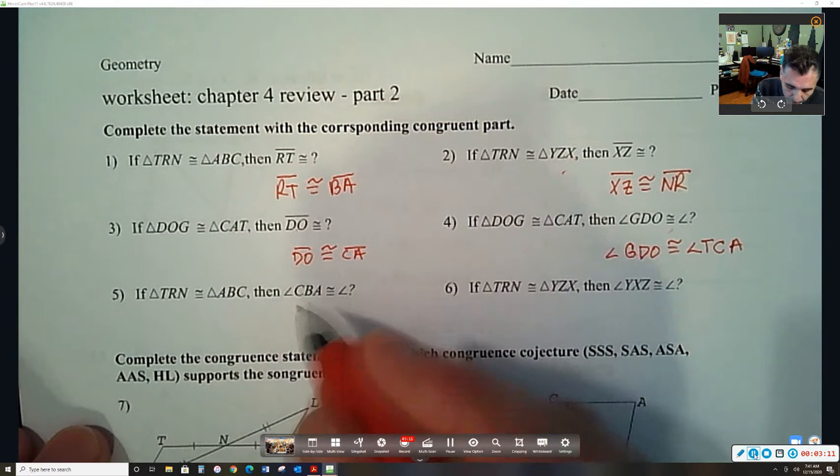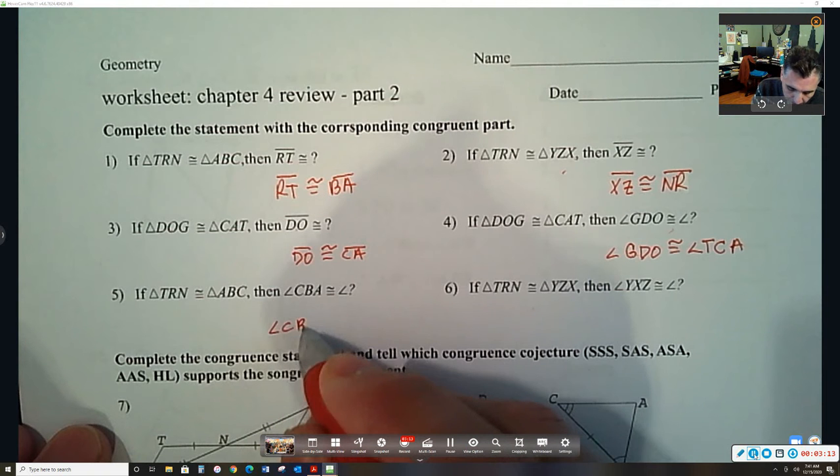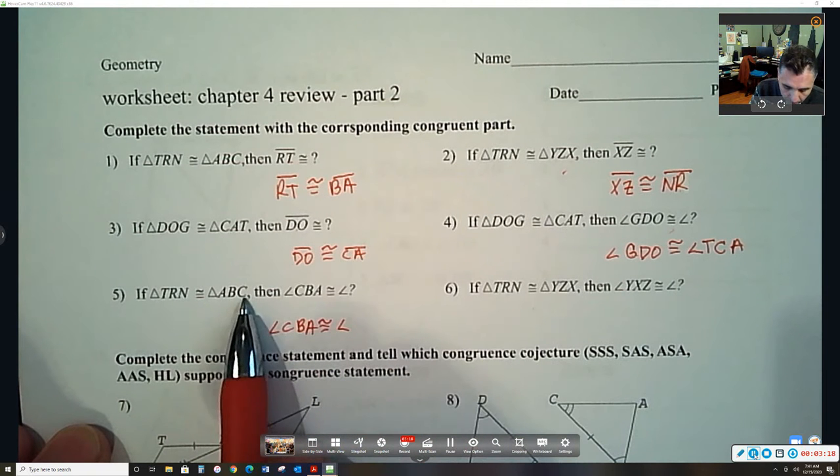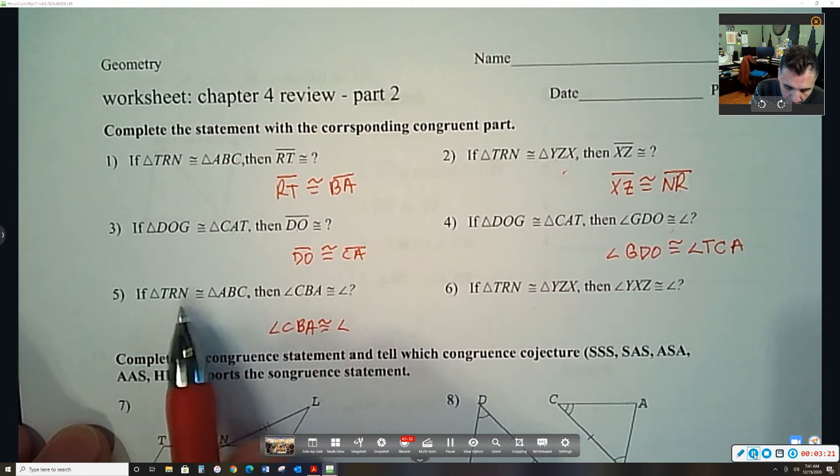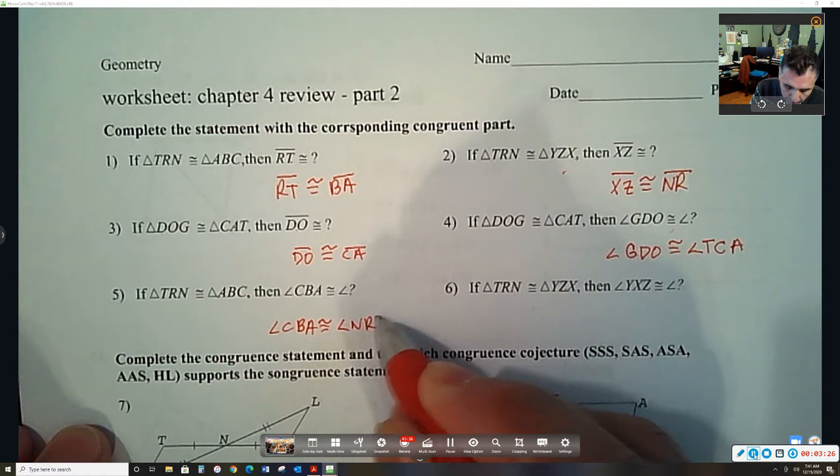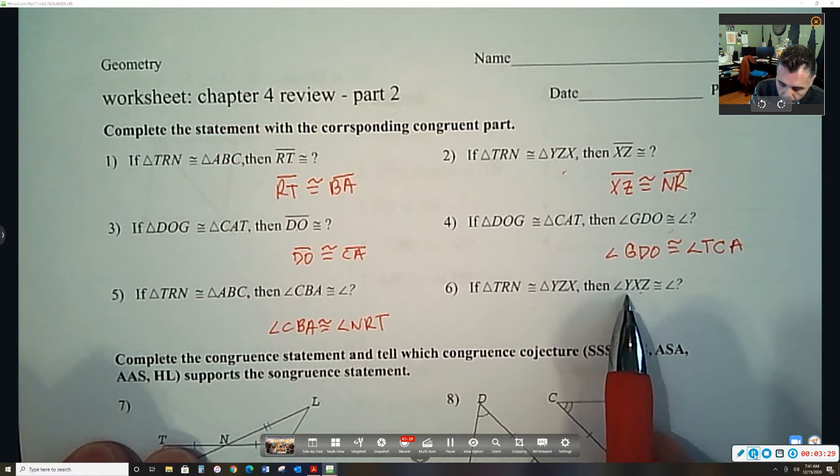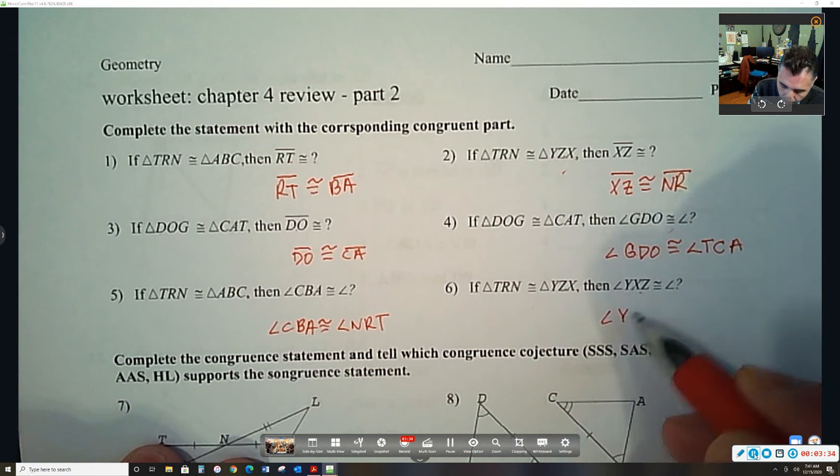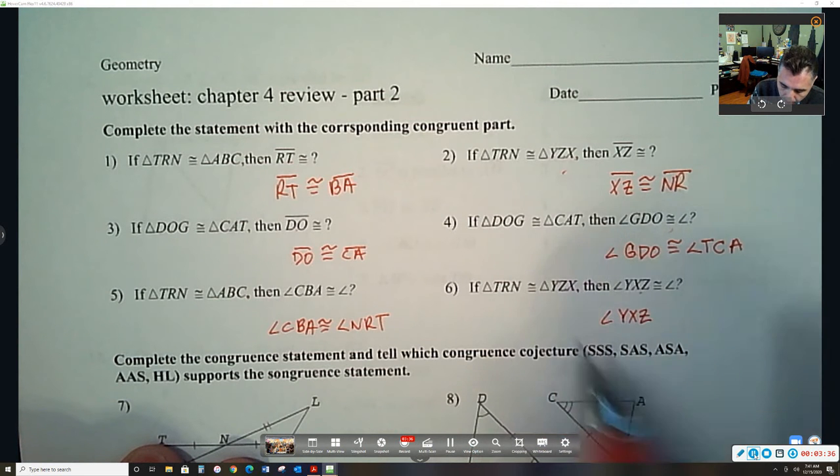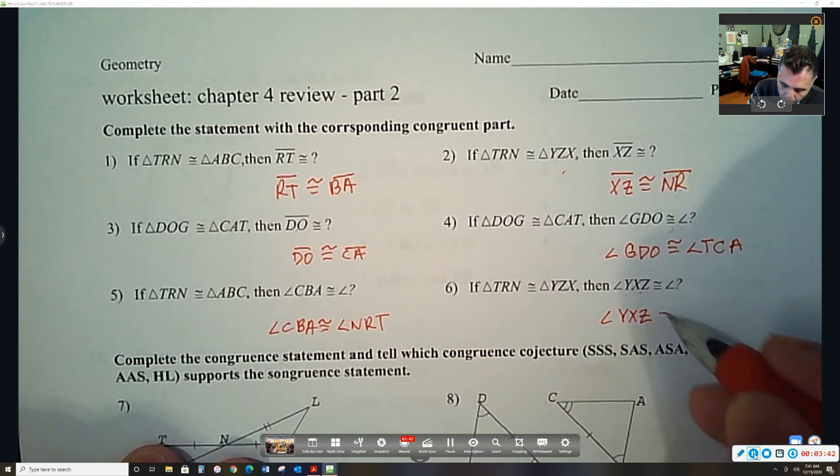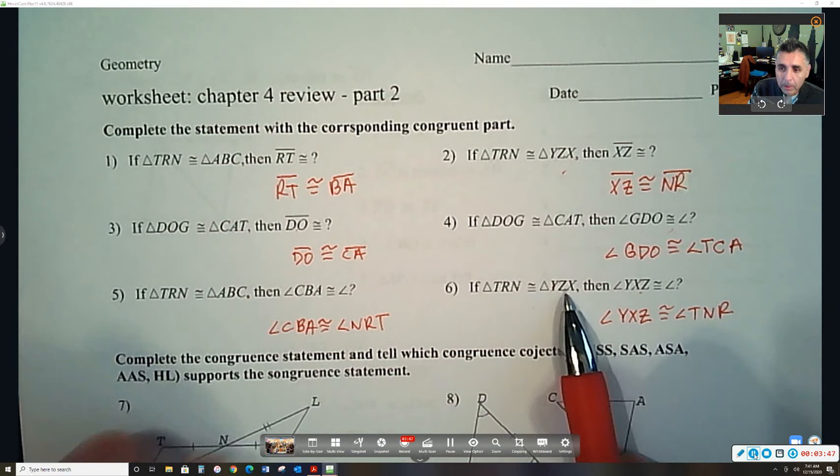And then let's move on to this one. Angle CBA is congruent to which angle, based on this congruent statement. Well CBA is just going backwards. So this one should be NRT. And then this one, angle YXZ. So it goes Y, X, Z. So this one should be TNR. And that's it.